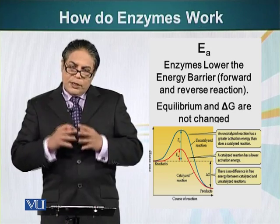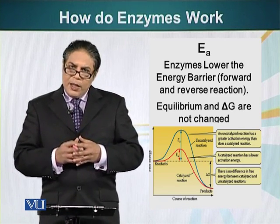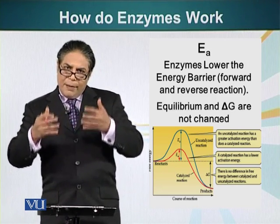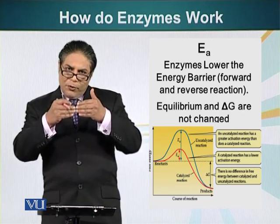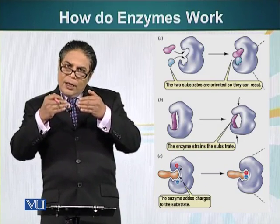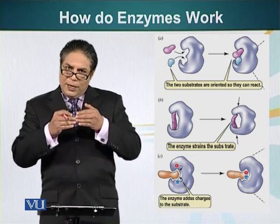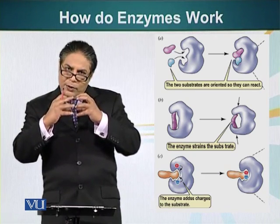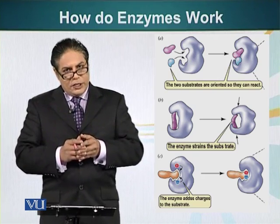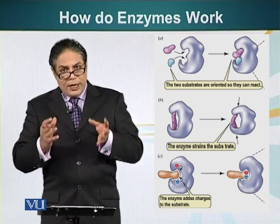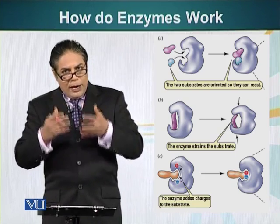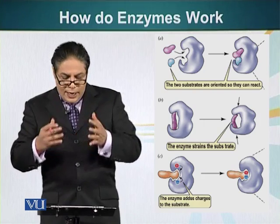How do enzymes lower the activation energy? For example, enzymes can orient the substrate molecules. When we are making a peptide bond, two amino acids have to be at the right orientation — the carboxy domain of one amino acid has to interact with the amino domain of an adjacent amino acid. So enzymes can hold substrate molecules in appropriate orientation, and that's one way they can lower the activation energy. Chemical reactions occur when two molecules collide, so at random, the probability that two amino acids will collide in the right orientation is lower.